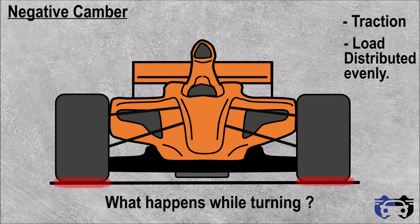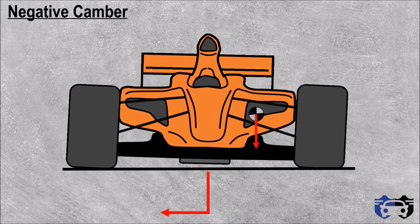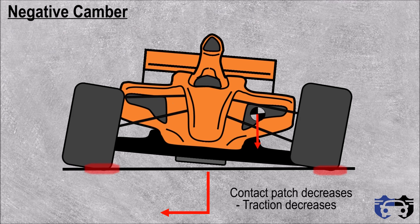But what happens while turning? Suppose the car is taking a right turn — this will lead to an increase in load on the outer tire and there will be body roll. This body roll will cause the outer tire to roll, and now you can see the tire is not flat from the bottom, which leads to a decrease in traction of the tire while turning.